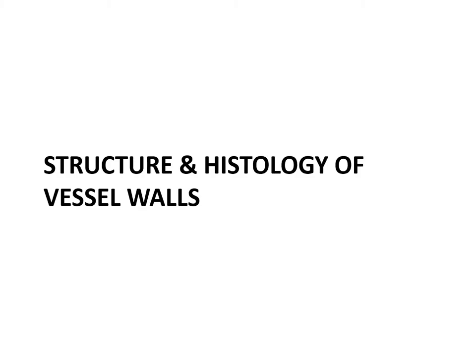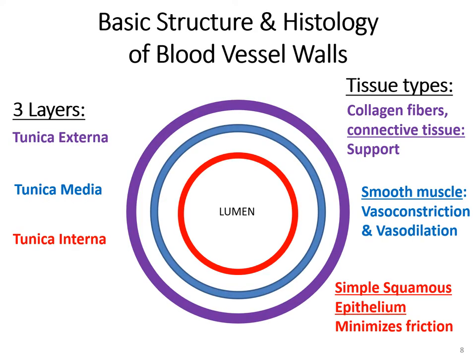On to the structure and histology of vessel walls. There is a basic scheme to the structure of a vessel wall. This diagram shows that a vessel could have up to three different layers. These layers, from superficial to deep, are: one, the tunica externa, shown in purple; two, the tunica media, shown in blue; and three, the tunica interna, shown in red.